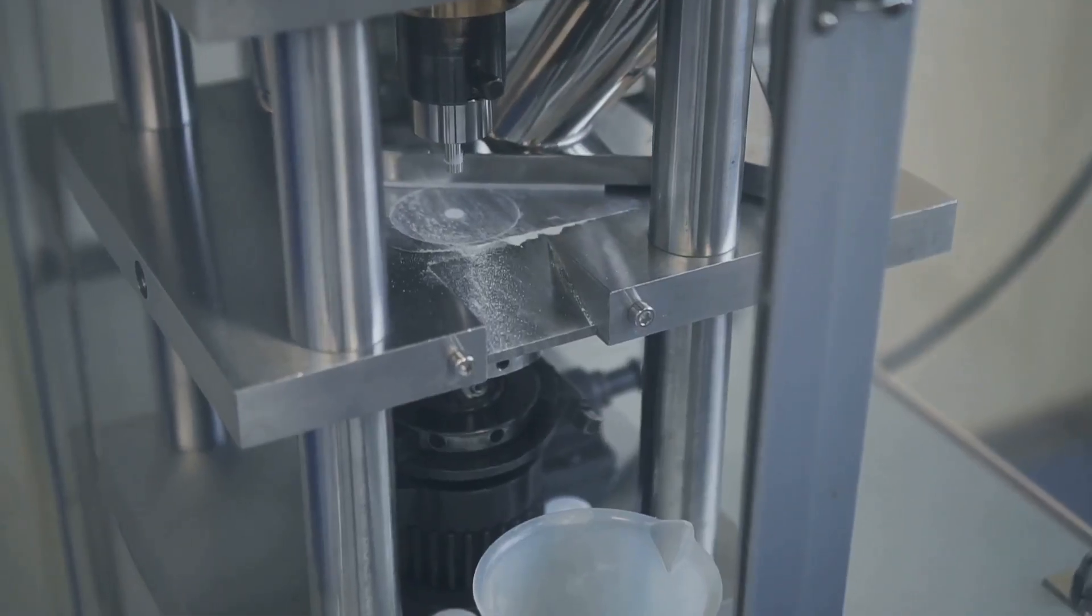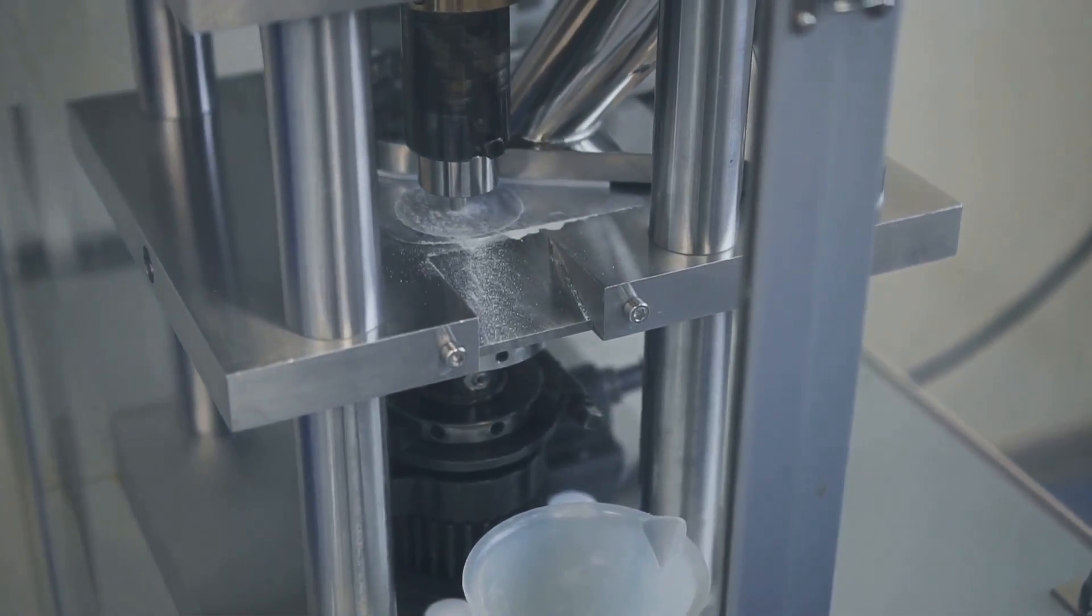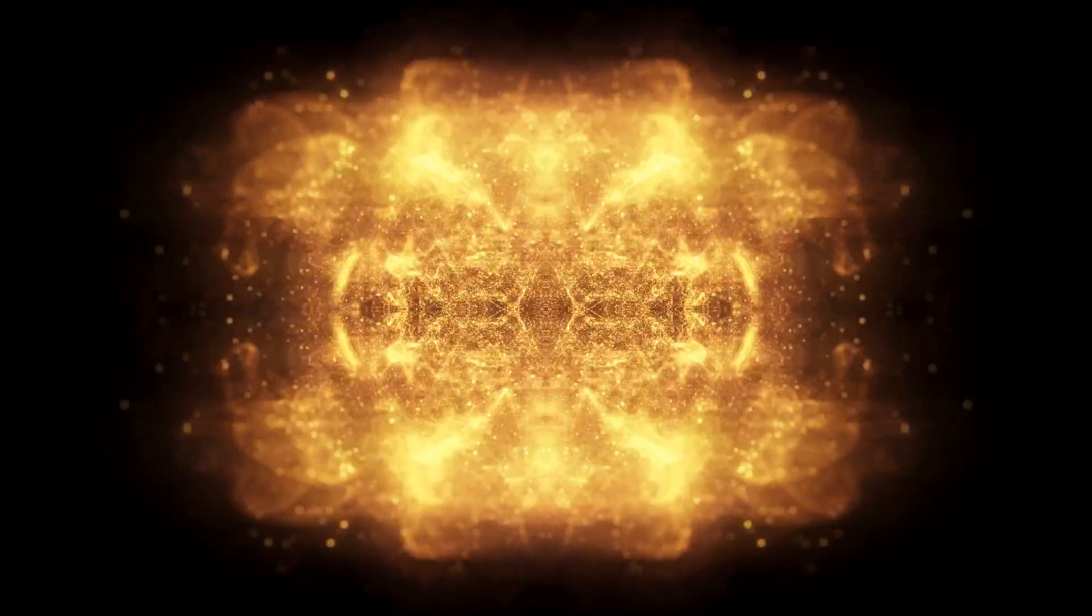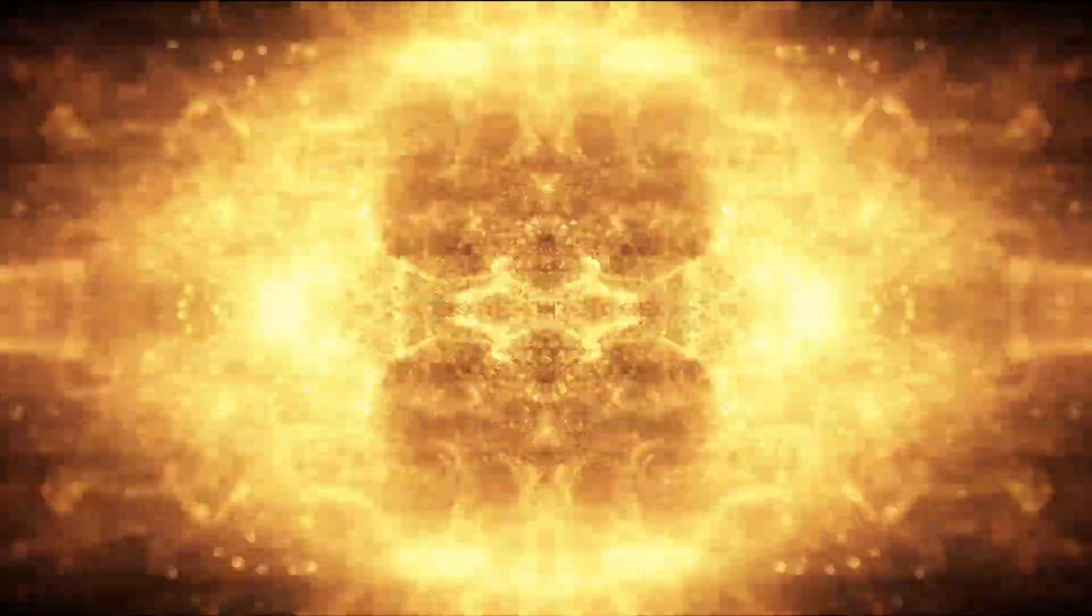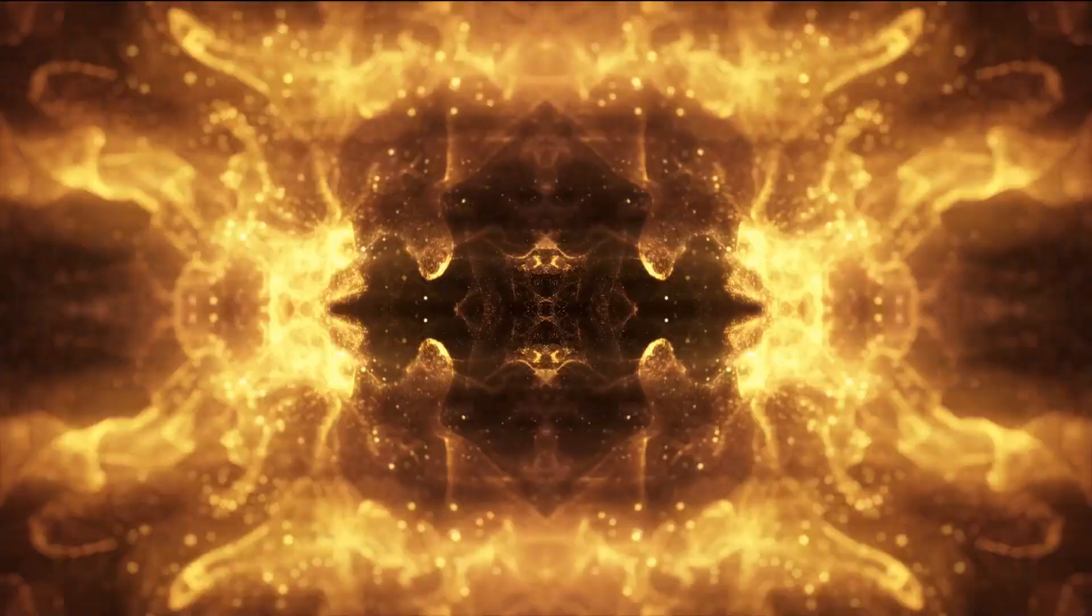During three years of experiments, scientists created about 86 billion gold atoms. That's just 29 picograms, less than a speck of dust. And each gold nucleus exists for only a few microseconds before it smashes into the walls of the collider and disappears.